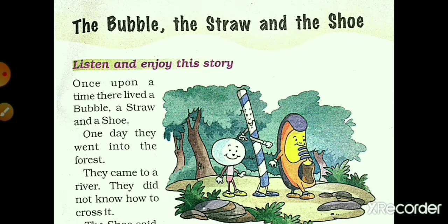First, I explain the meaning of the title. 'Bubble' means — paani mein jo bulbuley hote hain, usi bolte hain bubble. 'Stroke' or 'straw' means — jo hum cold drinks ya coconut se drink karte hain, us mein jo lambi si hoti hai, usko bolte hain straw. 'Shoe' means joota. So I hope now you understand the title of this chapter.